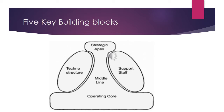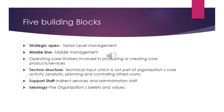In these five building blocks, the strategic apex represents senior level management, the middle line represents middle management, and the operating core represents workers involved in producing or creating core products or services. Techno structure means technical input which is not part of the organization's core activity — for example, analytics, planning, and controlling others' work.